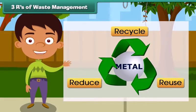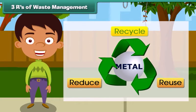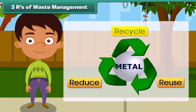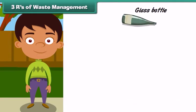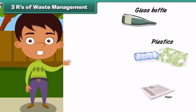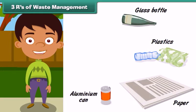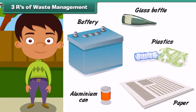The three R's of waste management: The first R stands for Recycle. Recycle means to process old, used items in a way that they can be used to make new products. For example, items made of glass, plastic, newspapers, aluminum cans, and batteries can be recycled to make new products.